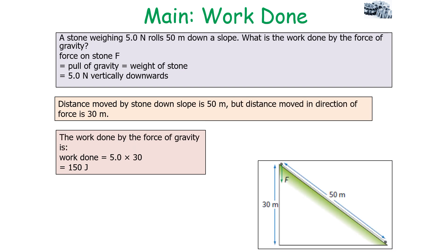A stone weighing 5 newtons rolls down a 50-metre slope. What is the work done by gravity? The force is 5 newtons vertically downwards. The distance moved down the slope is 50 metres, but the distance moved in the direction of the gravitational force — the vertical — is 30 metres, so we use 30. Work done equals 5 times 30, which equals 150 joules.